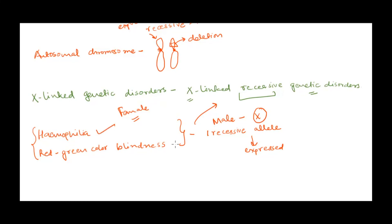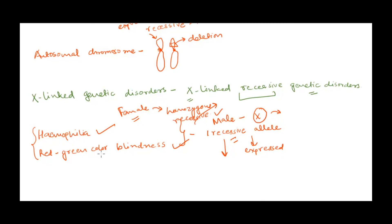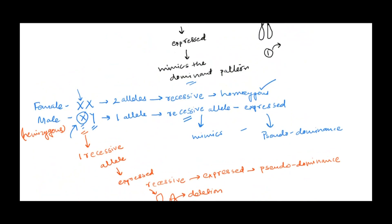For males, only one recessive allele results in the genetic disorder, whereas females need to be homozygous recessive — both chromosomes must carry the recessive allele. A recessive allele, simply put, is one that gets expressed in the absence of a dominant allele. Since there is no other X chromosome in males, one recessive allele is enough to be expressed. That is why this condition is more problematic in males.